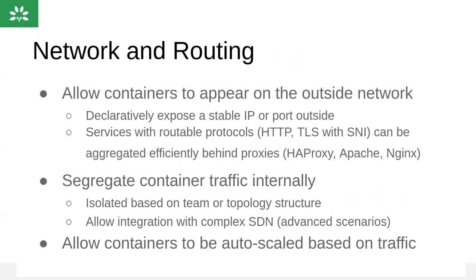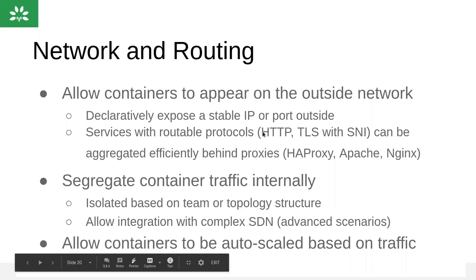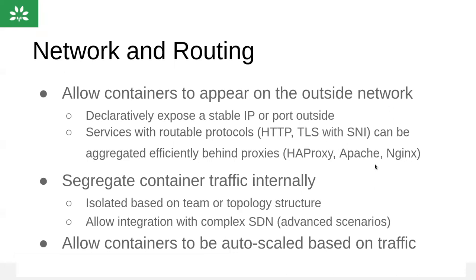The network and routing part is very important. Whenever we have deployed any application, we need to provide secure routing to the outside. OpenShift takes care of that. Whenever any deployment is done, it will provide the routing. It will ask which port should be accessed — the container port or the inside container port — and how to access from outside. We provide the parameters, and we can access the application from outside. It supports different level protocols like HTTP, TLS, and SNI. We can manage with Nginx, HA Proxy, and Apache.